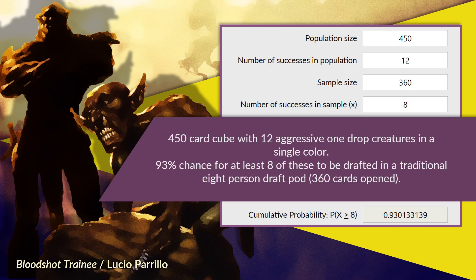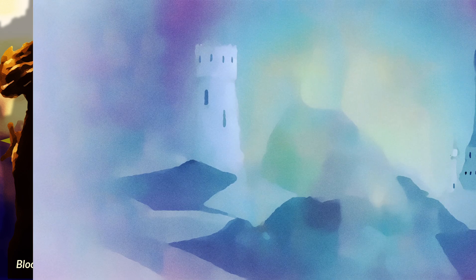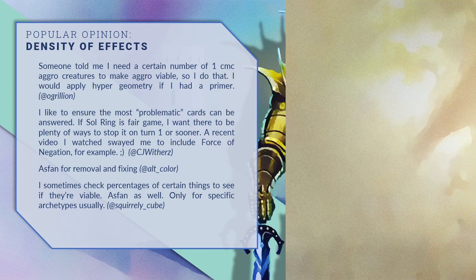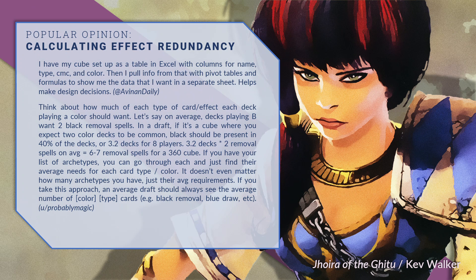If our cube has 450 cards and 8 players open 3 fifteen-card boosters — a total of 360 cards seen — the probability of getting 8 or more one-drops from a total of 12 in the entire cube would be 93%. That's good news for aggro drafters. This is an overestimation, however, because other players will pick cards and might take some one-drops we want, and we might pick a different card over any one-drop we see. This gives us an idea of the critical mass needed to support a good aggressive deck. This calculation works best for highly parasitic archetypes, since it leans on the assumption that no one else wants the cards we want — generally true for aggressive one-drops, but less meaningful for widely-desired cards like removal.